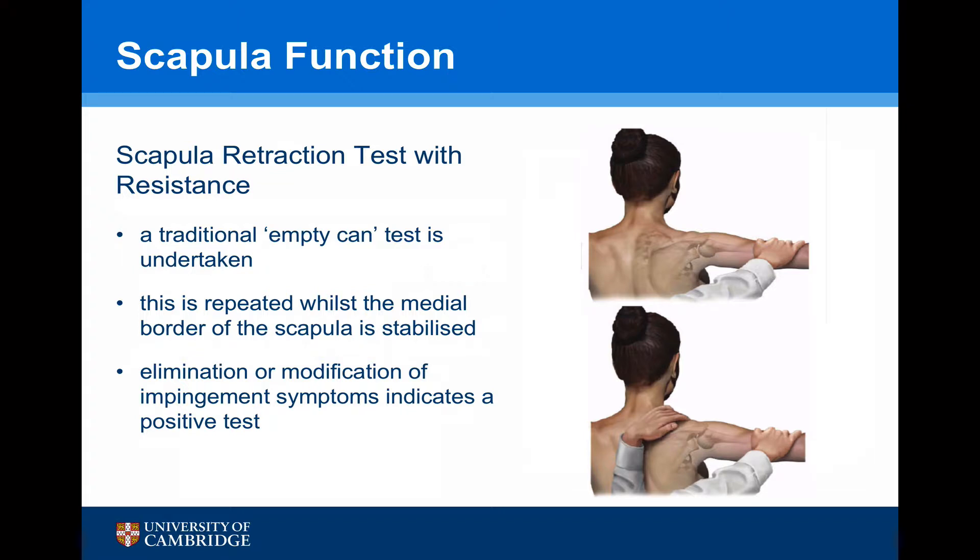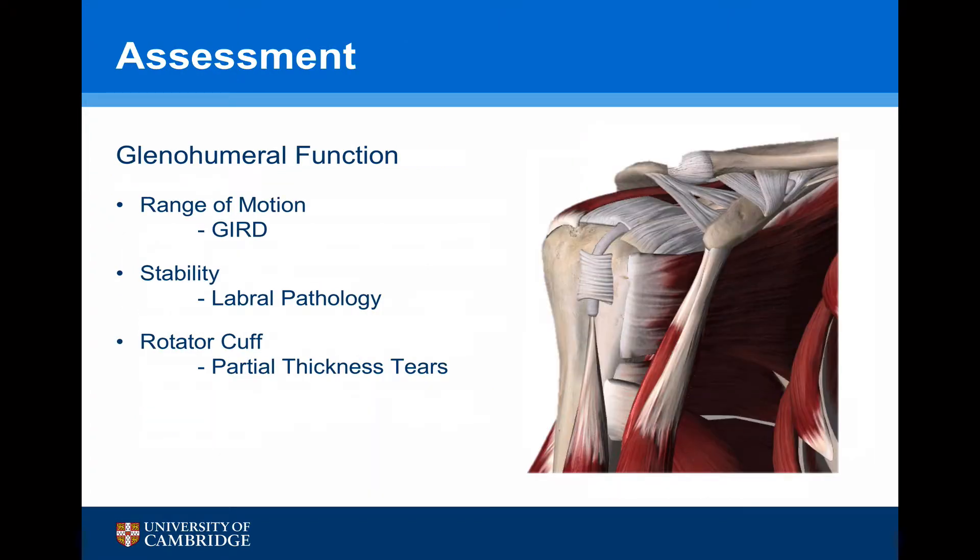Having assessed the scapulothoracic function, it is important to assess the glenohumeral function. Things that one is particularly interested in with regards to the throwing shoulder are the range of motion and the presence of GIRD, stability and particularly labral pathology, and the rotator cuff, particularly focusing on partial thickness tears.